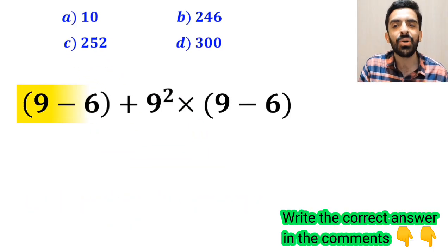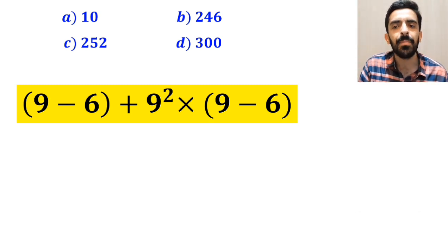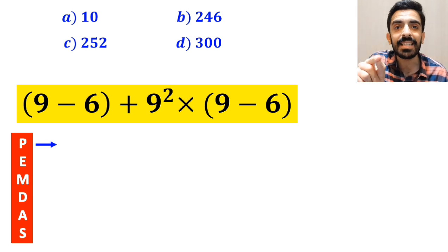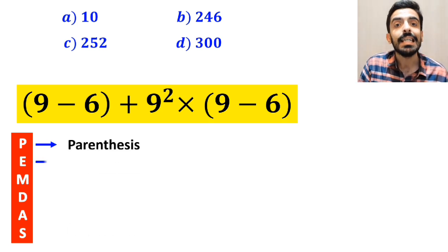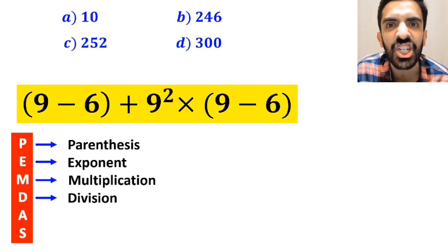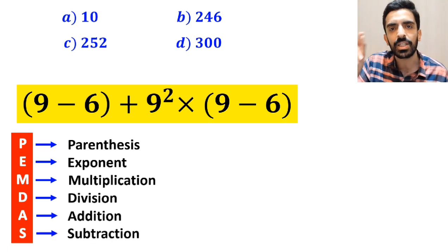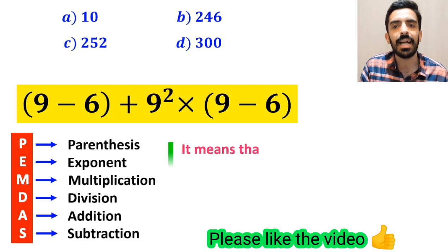Now let's go through this question step by step and solve it together. To solve this problem, we must follow the PEMDAS rule: P stands for Parenthesis, E for Exponent, M for Multiplication, D for Division, A for Addition, and S for Subtraction.